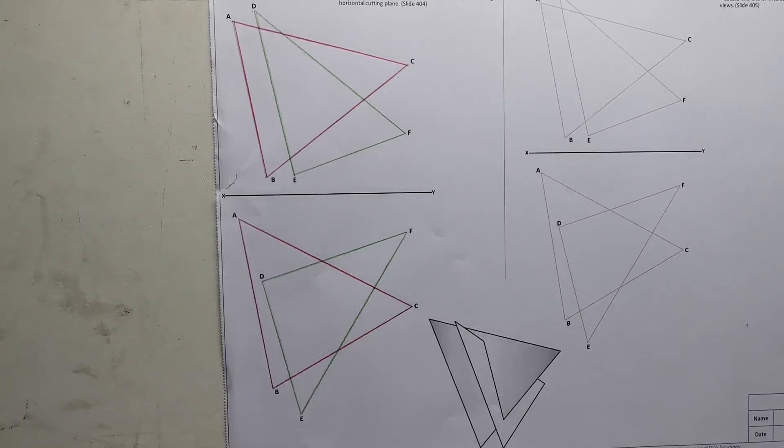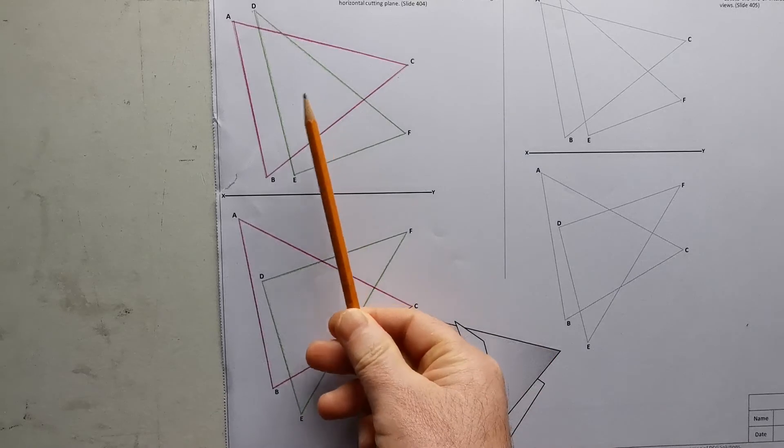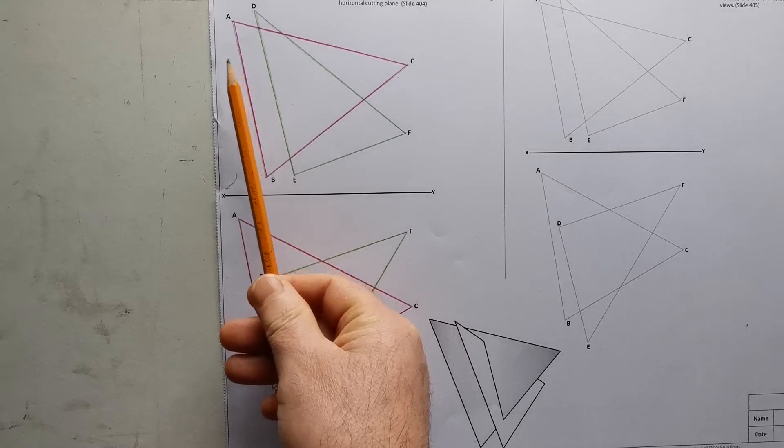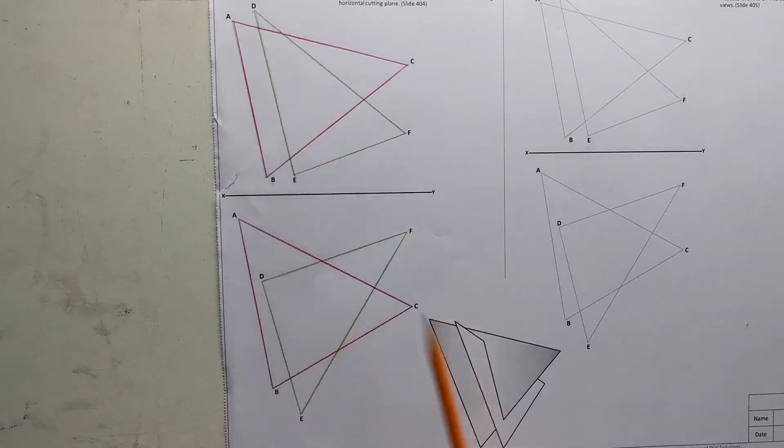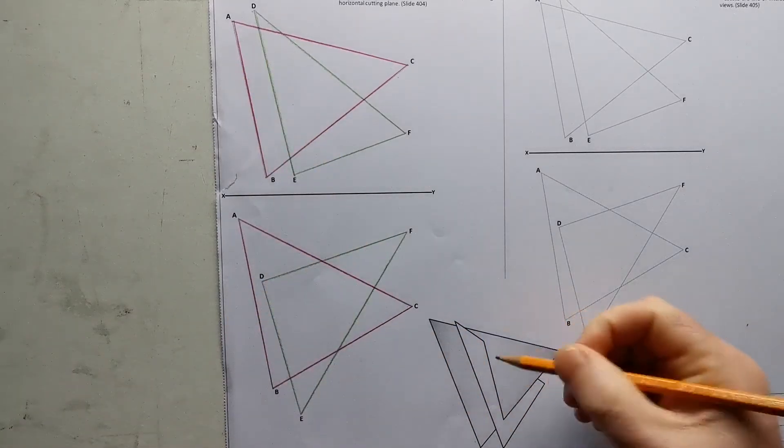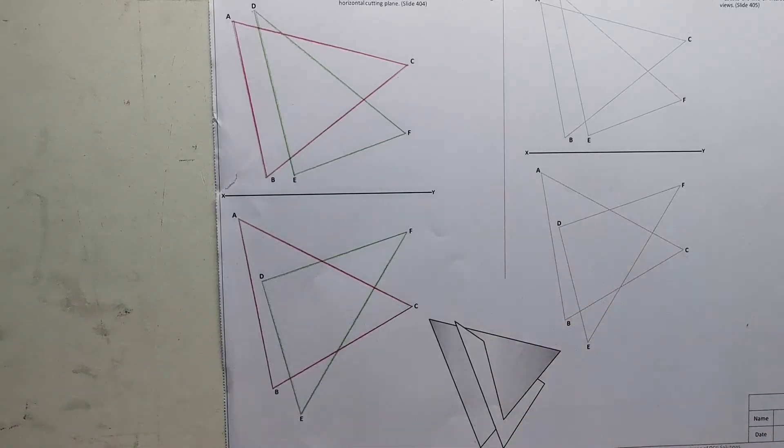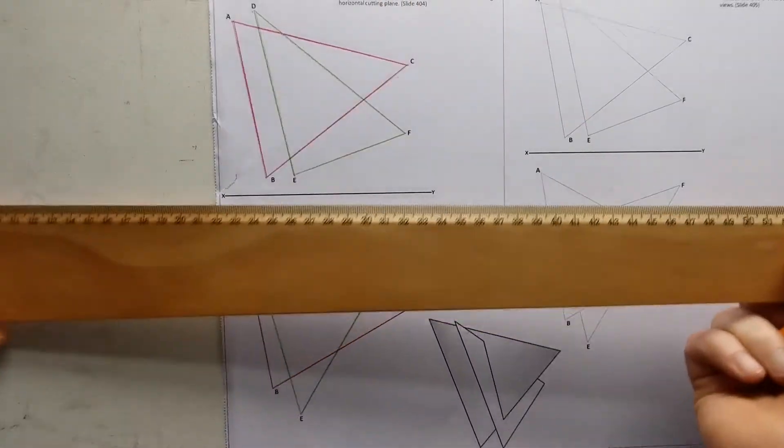Okay people, sheet 5 intersecting planes. Now we've got here probably the toughest situation where we've got two planes and no line of intersection, so we are looking for this line of intersection along down here. That is what we're looking for, so what I would do there, we're asked to solve it using horizontal cutting plates.